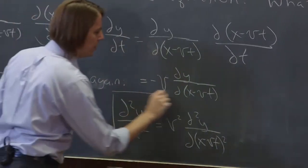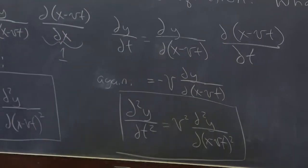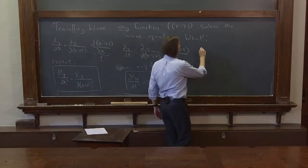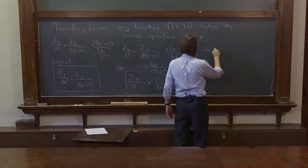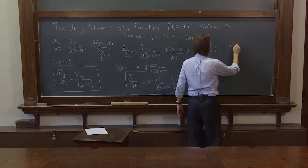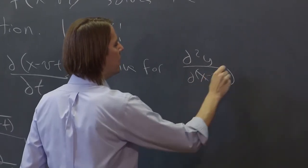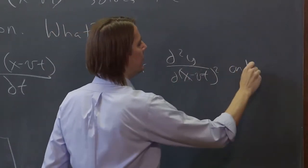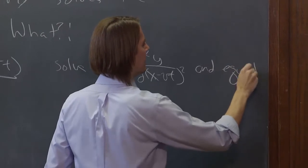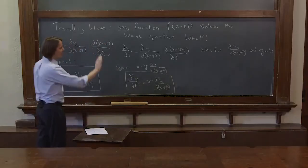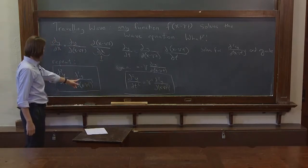So we know this is also true for functions f of x minus vt. So let's solve for d²y/d(x-vt)² and equate those two terms. And it got kind of messy there. But you see what we're going to do. This one, this one says dy/dx is on this side.